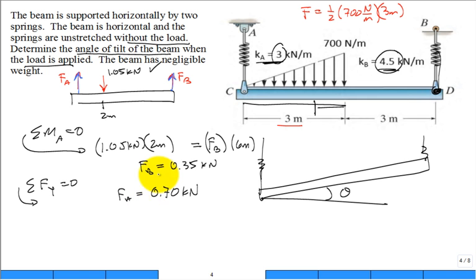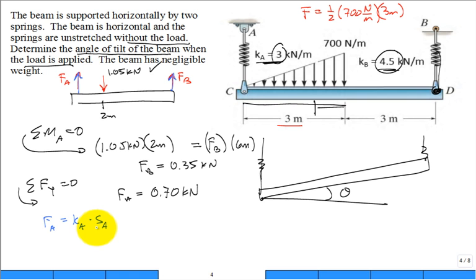Now that we have the two forces, go back to the spring equation: the force in spring A equals the stiffness of spring A times the stretch in spring A. Neither spring goes into compression — both are in tension, they both stretch. Some problems have one spring compress while the other stretches, which is more challenging. Here both springs just stretch. The stretch of spring A comes in at 0.23333 meters.